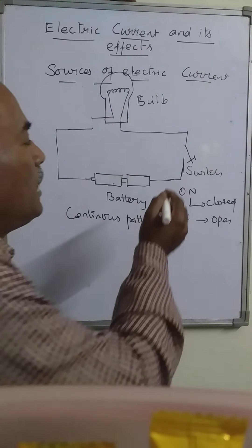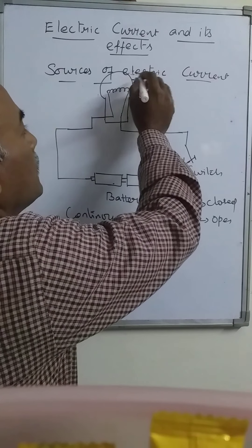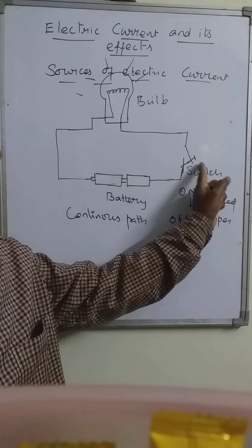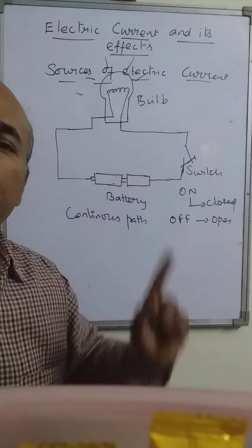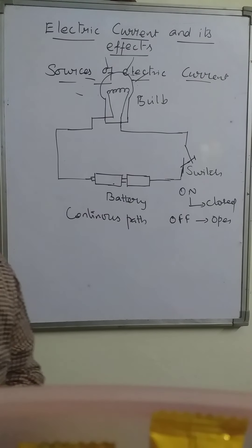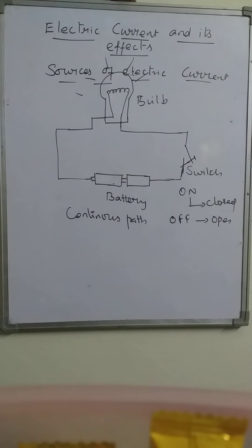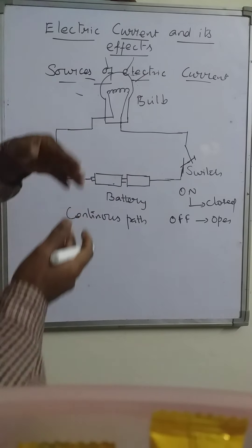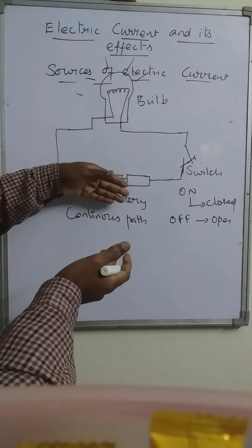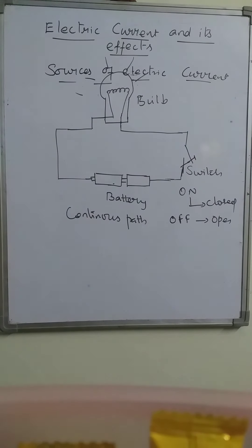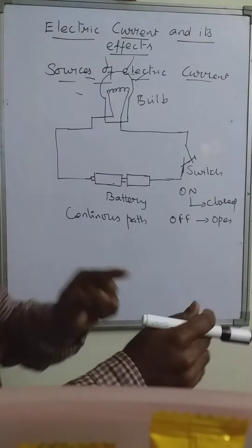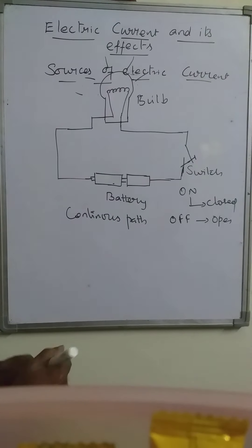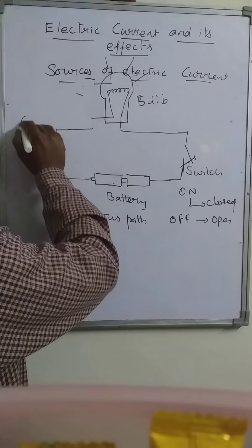So here we are closing the switch, and we see that the bulb is glowing. If it is kept in the open position, the bulb will not glow. So here we are using these components: the cell, and cells connected together make a battery, the switch, and a bulb. These components are connected with the help of wires — we call them connecting wires.